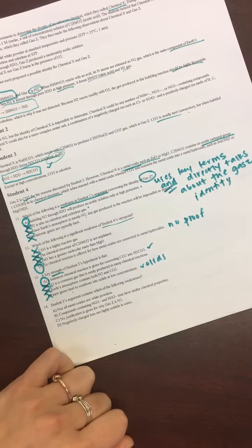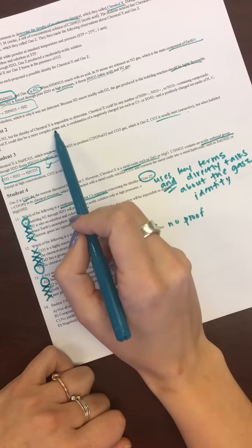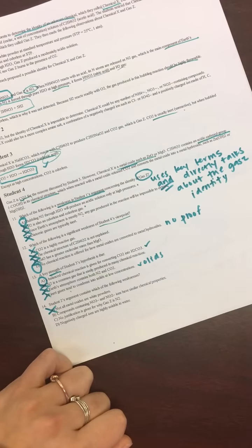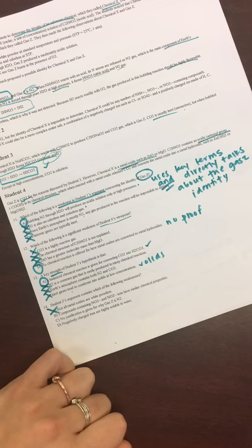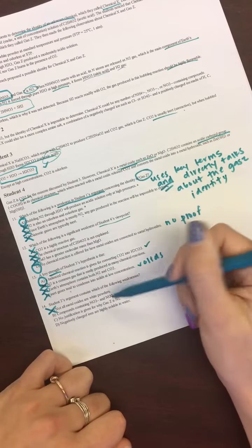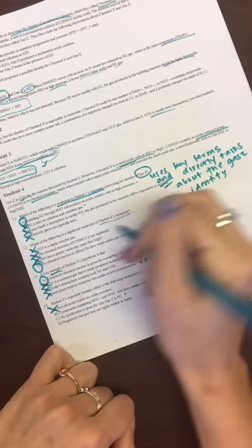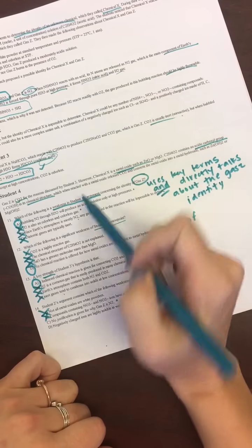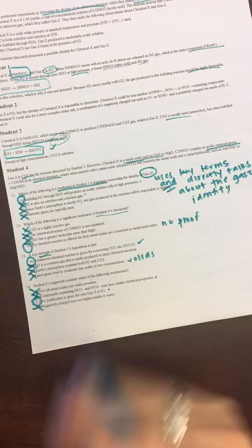Alright, 14. Student 2's argument contains which of the following weaknesses. Not all metal oxides are white powders. So, student 2. Gas Z is N2. Chemical X is impossible. More complex amine salt. We don't talk about white powder at all. So, we're going to go ahead and nix that. We also don't talk about metal oxides. Compounds containing nitrate and nitrite ions have similar chemical properties. We'll leave that in there, because that's what he's talking about. Or she. No justification is given why gas Z is N2. Yeah, that's a great one. We don't talk about that at all. So, I'm going to cross off B. And negatively charged ions are soluble in water. Do we talk about this dissolving in water at all? Nope. Don't even mention it. So, the weakness is C. We don't, like, if you're not saying why that's your reason, then you have a bad reason.